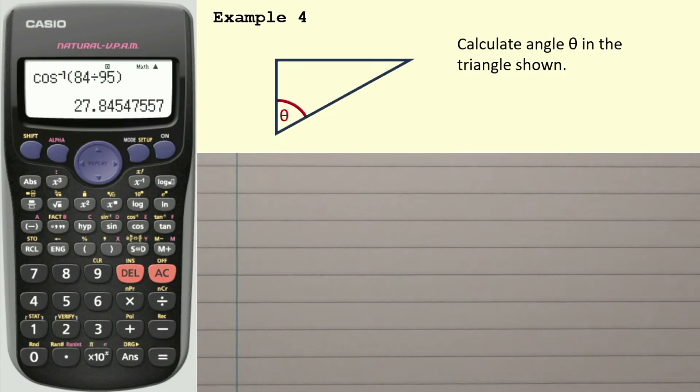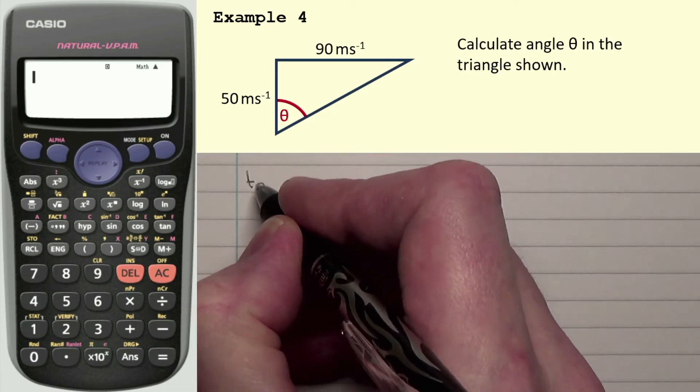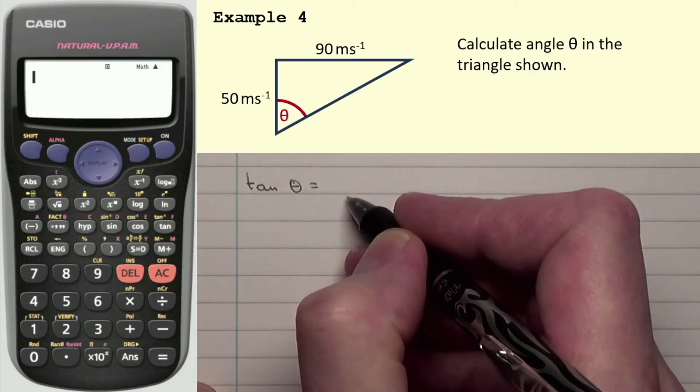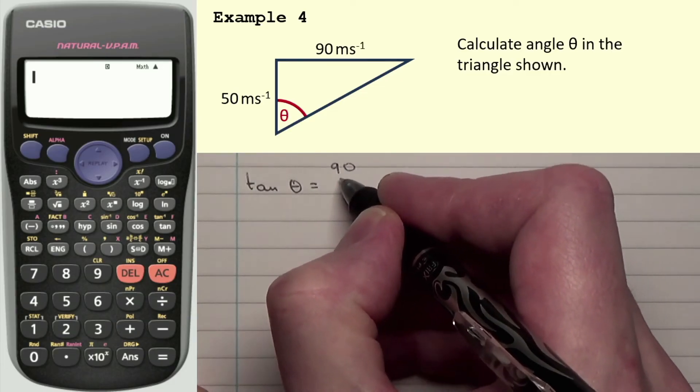So this is our final example. Now, the first thing I'll do is I'll clear that calculator. And if I show you the two sides, we have, first of all, this is the opposite side because it's opposite the angle. Second side is the adjacent. The one side that we don't know is the hypotenuse, the longest one. So this is going to be the tan function. And I know that tan theta is opposite divided by adjacent, so that's 90 divided by 50.